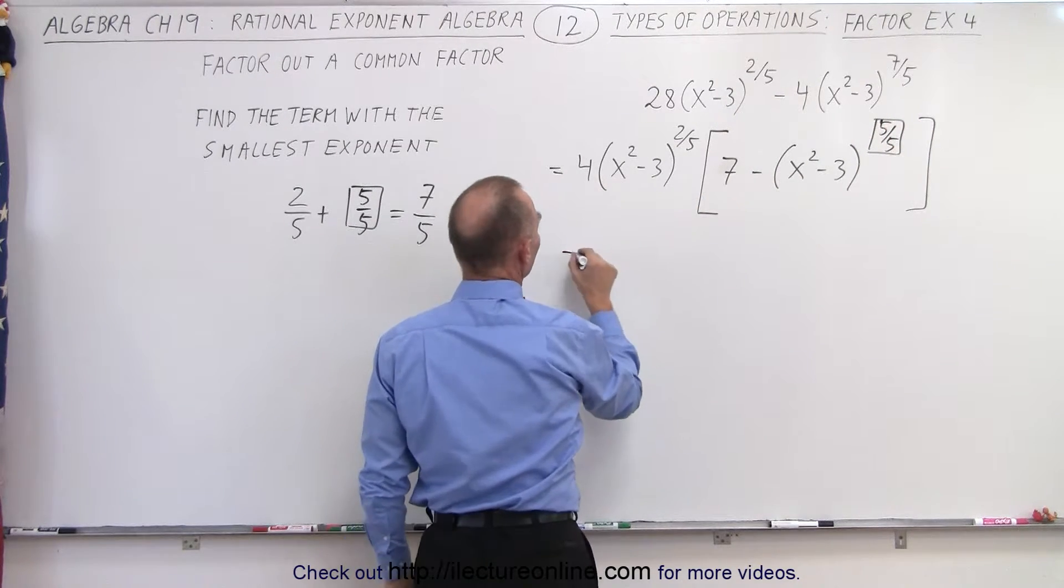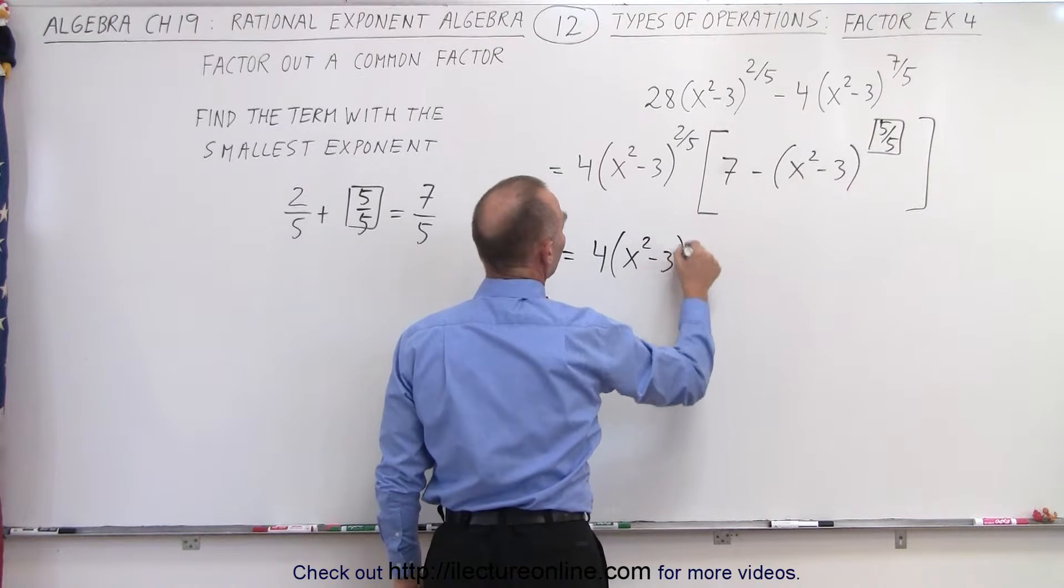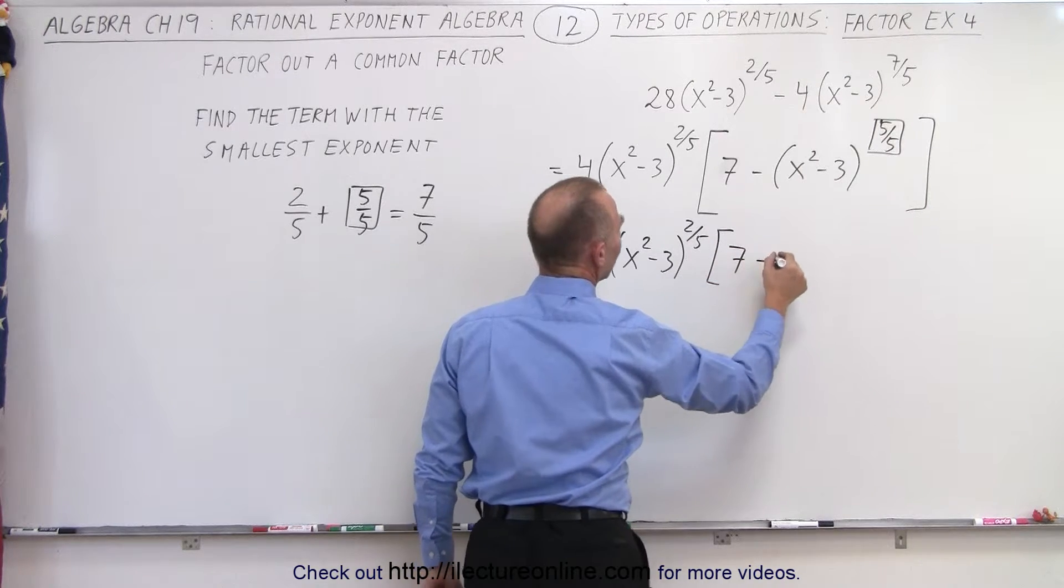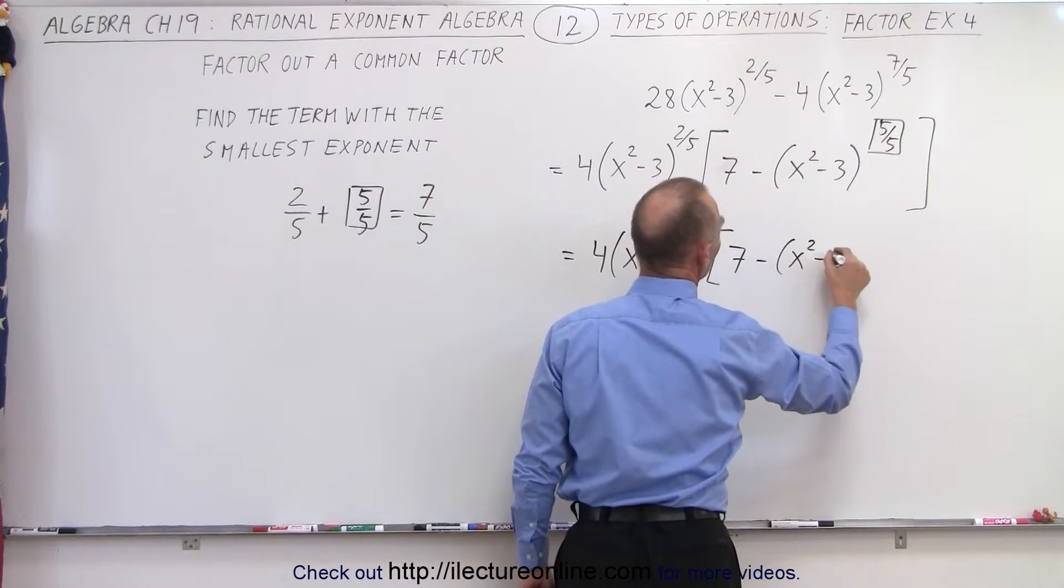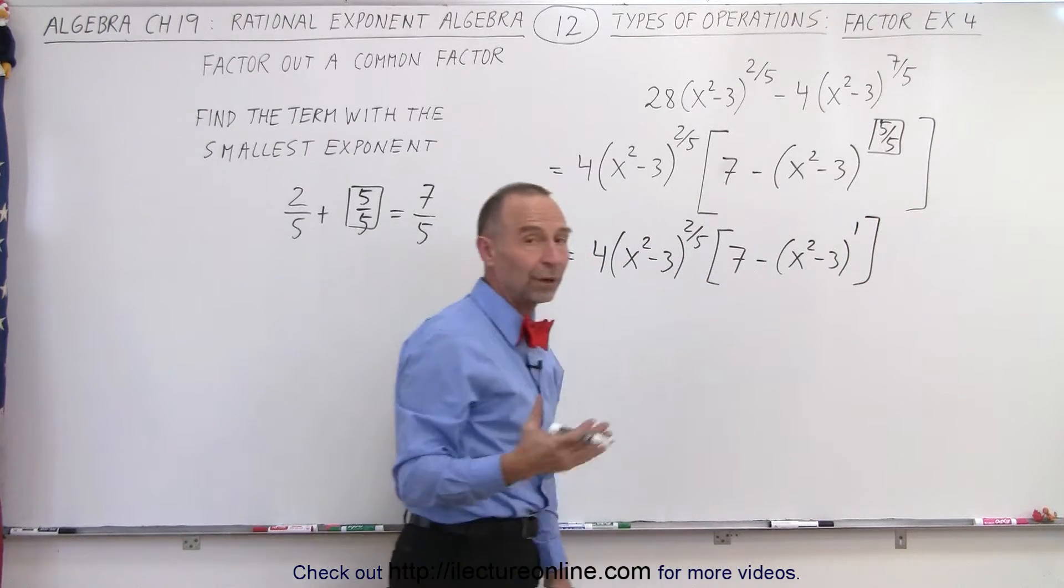Now we can rewrite that a little bit simpler. So this becomes 4 times x squared minus 3 to the 2 fifths power times 7 minus the quantity x squared minus 3 to the 1st power. And of course, we don't have to write that first power.